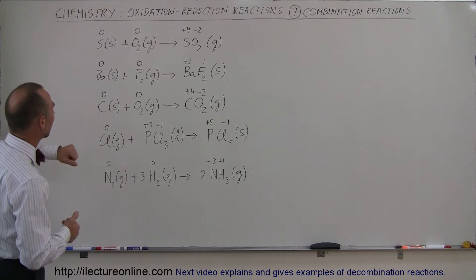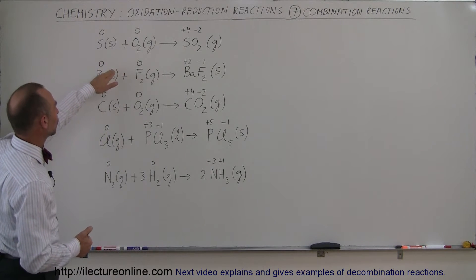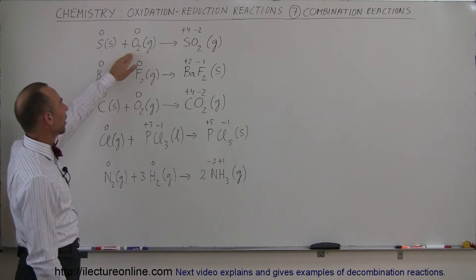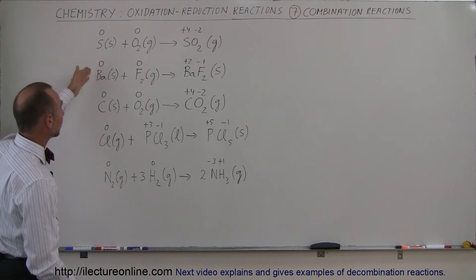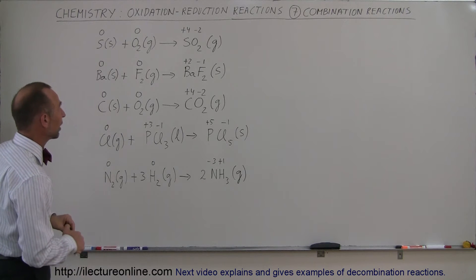So in this case I have some examples. We have sulfur and oxygen. Notice that sulfur in a solid state and oxygen in the gas state. They both have the oxidation number of zero because they're in their natural common state.